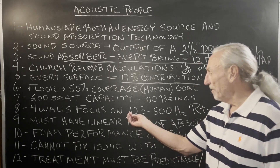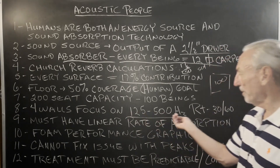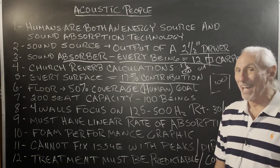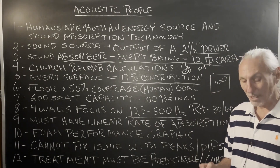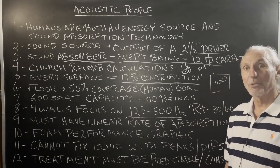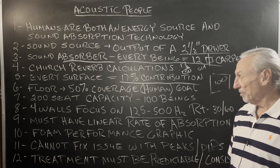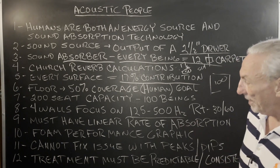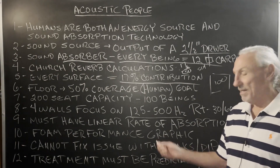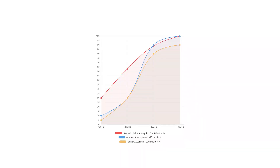We have to stay focused on the 125 to 500 cycle region. That's the most critical region for music and voice, and it also happens to be the most critical region for reverb in these larger rooms. What better product to use for that than our foam technology — you can see in the graphic here the linearity from 125 to 500. Look at the spatial irregularity of the other two products by comparison.